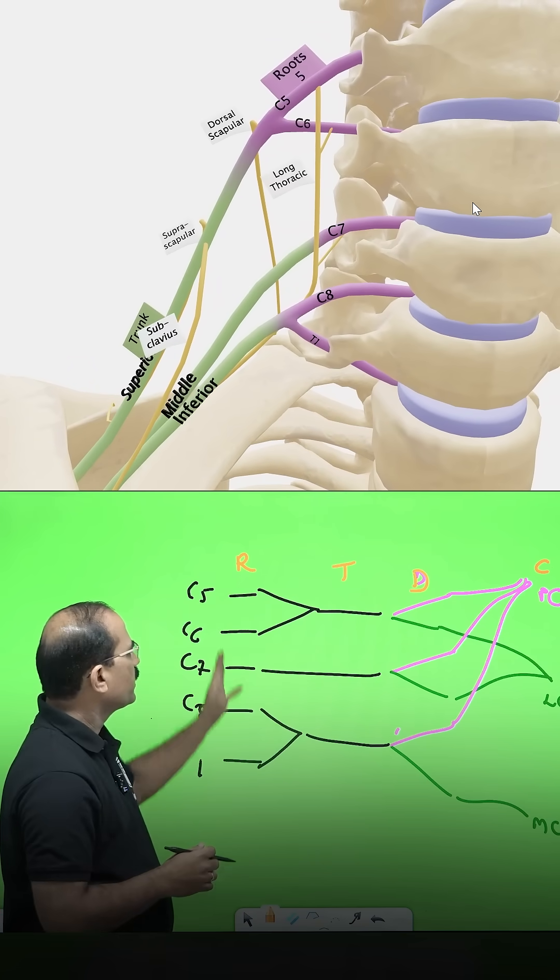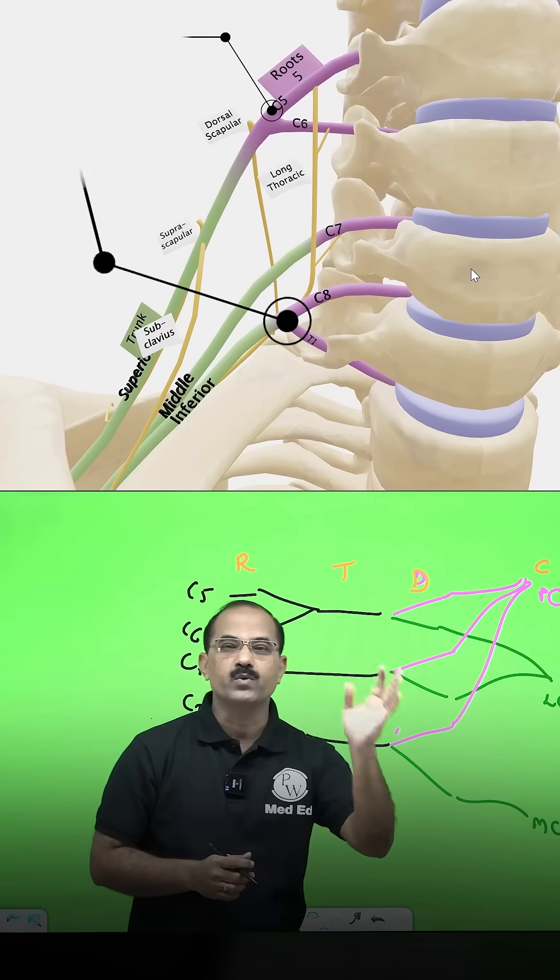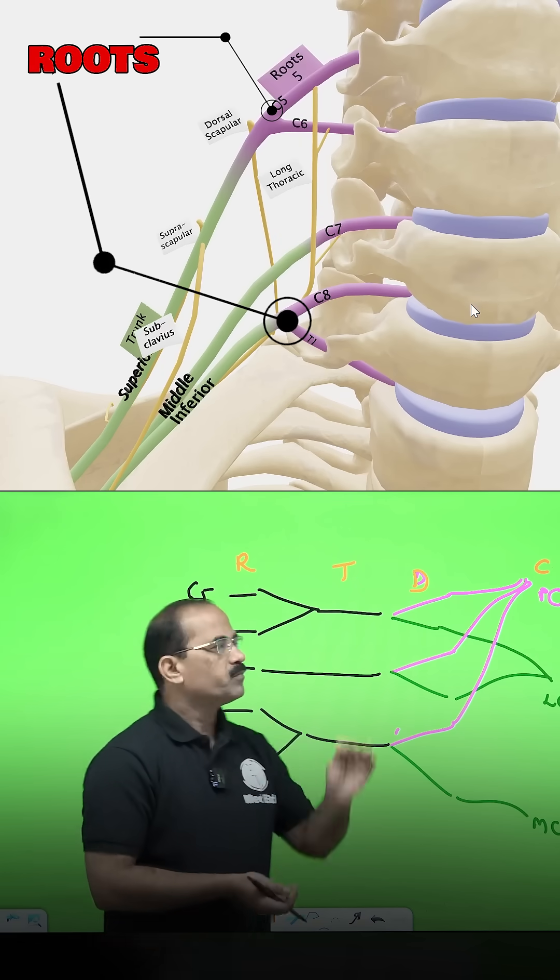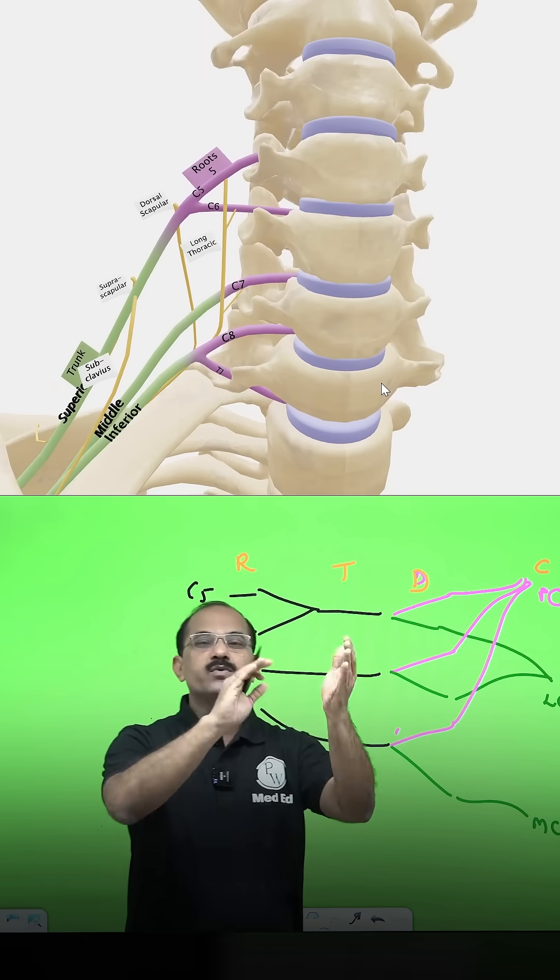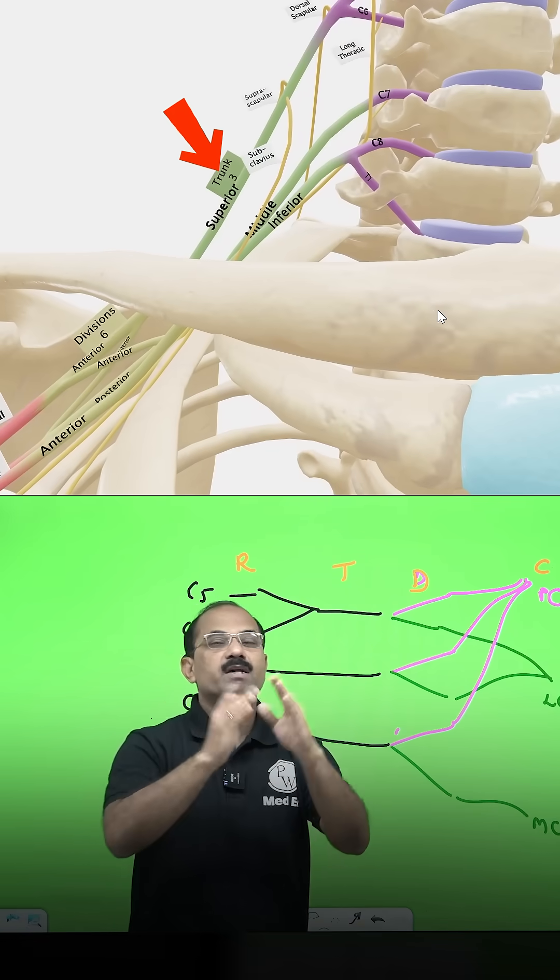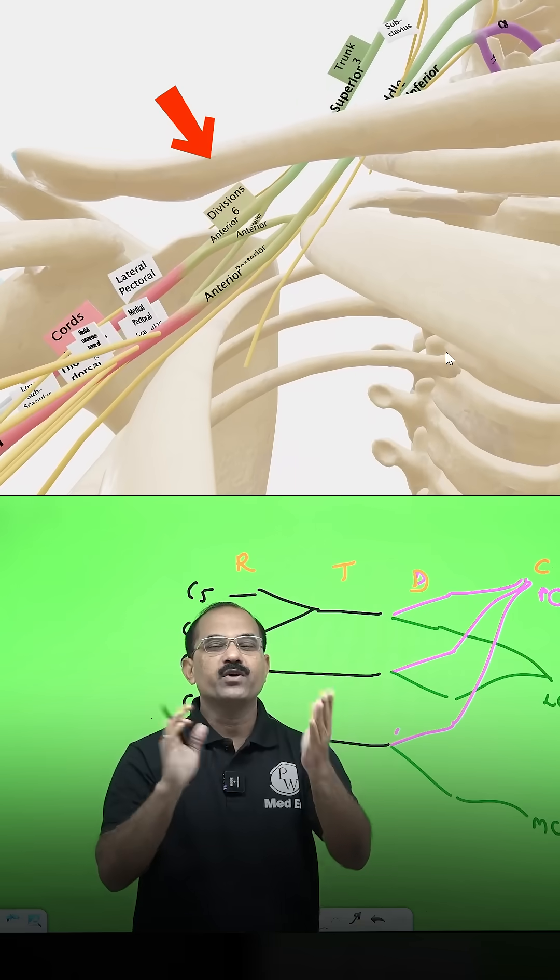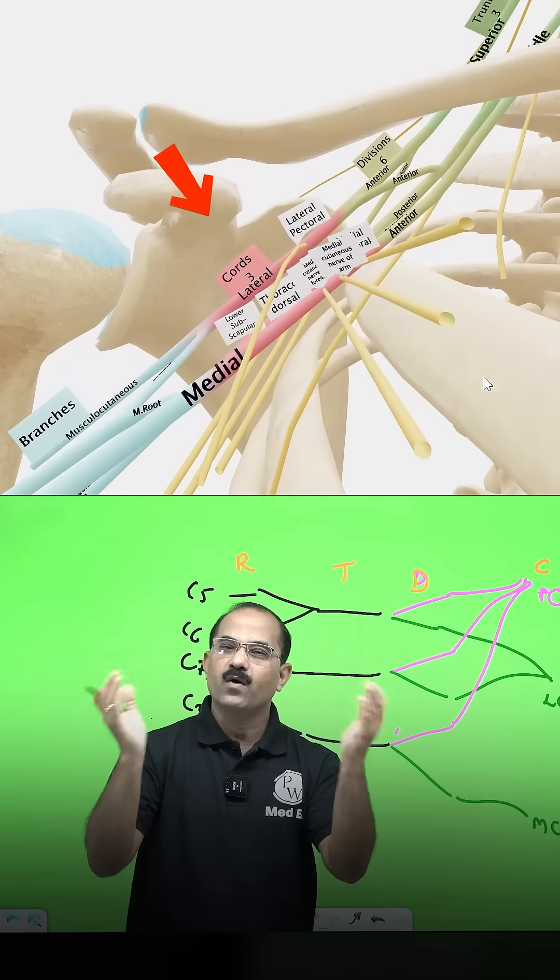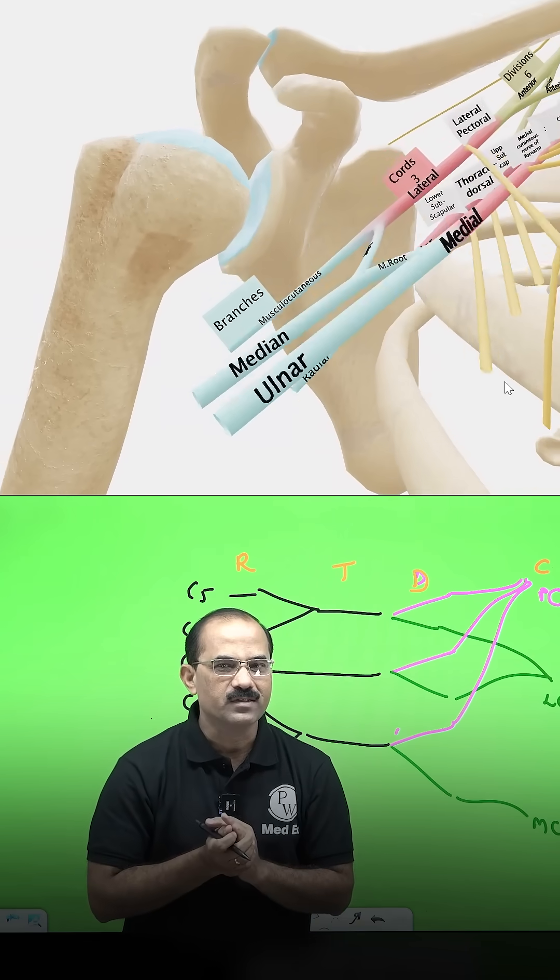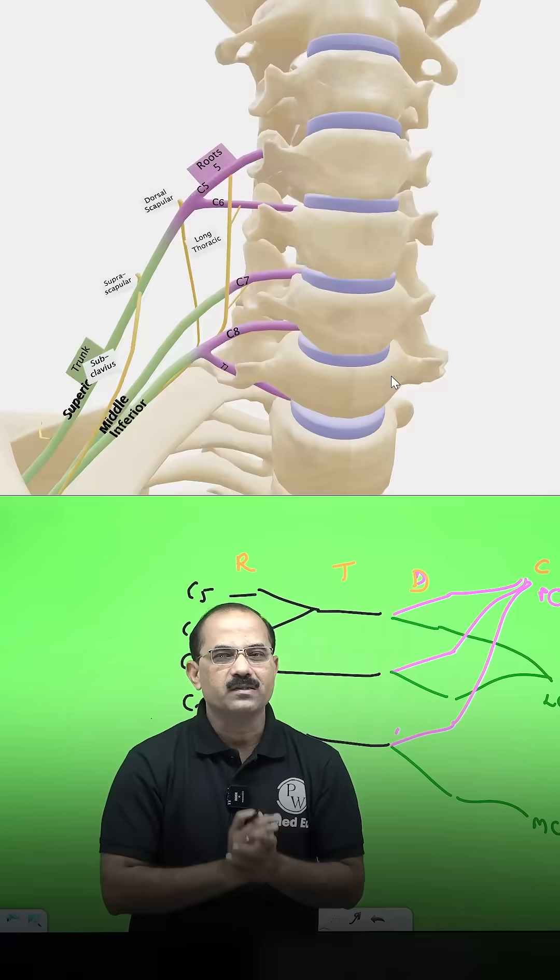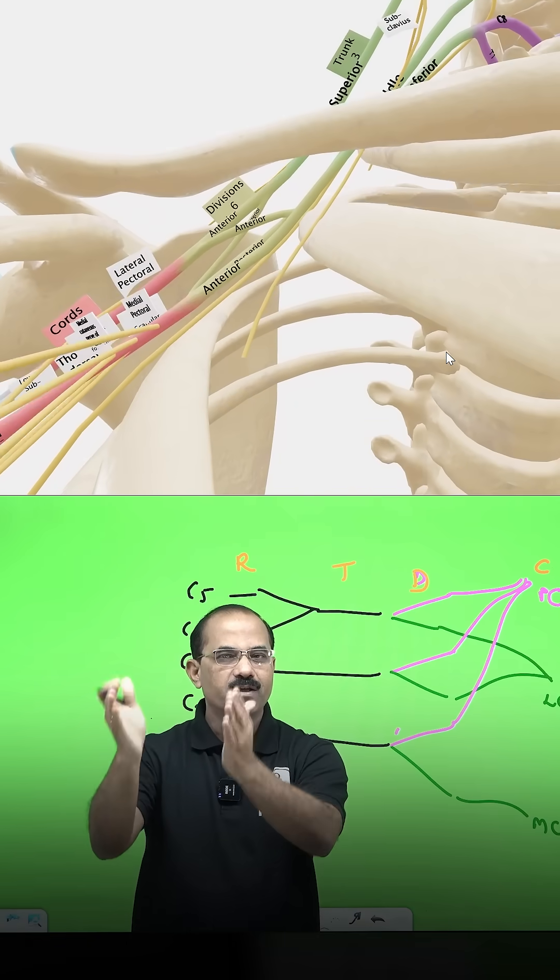These ventral ramei of C5 to T1 are called roots. We call them as roots. First you have roots. Now roots will join to form the trunks. Trunks will divide into divisions. Divisions will join to form the cords and the cords will divide into branches. That's how you remember the brachial plexus: roots, trunks, division, cords, and finally the nerves.